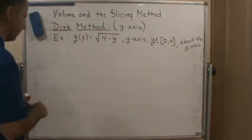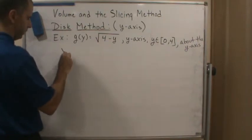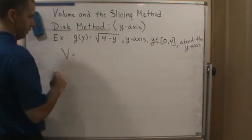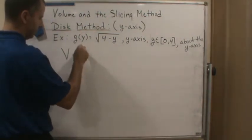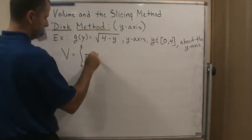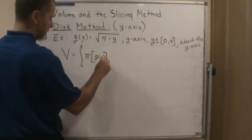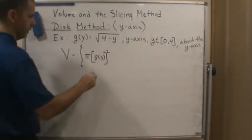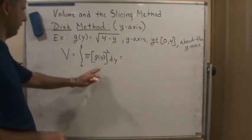And since we're going to rotate it about the y-axis, we're going to use the formula for the volume that's related to that. So it's going to be from c to d pi g of y squared dy. And so now I'm going to fill in the parts that I know.